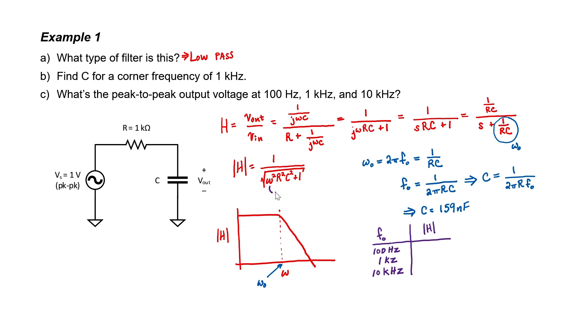Let's make a chart. If I substitute in 2 pi f for omega, I have everything I need to solve this equation for the three frequencies. The transfer function is unitless. It just represents a ratio of one voltage to another.